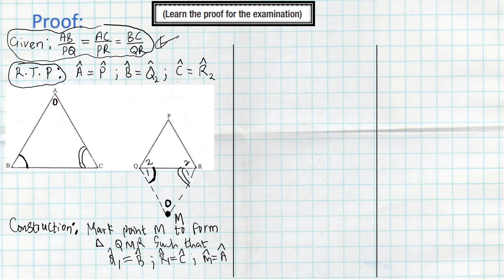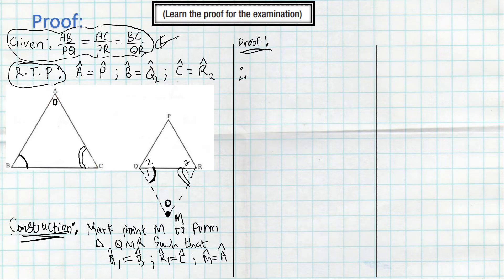Now let's go to the proof. We can see that by construction, triangle ABC is similar to triangle MQR because we made them similar by giving them the same angles.